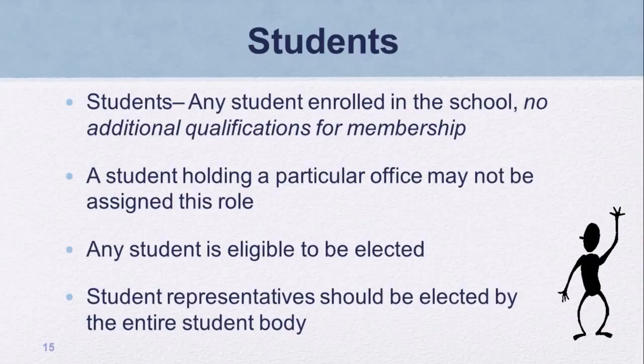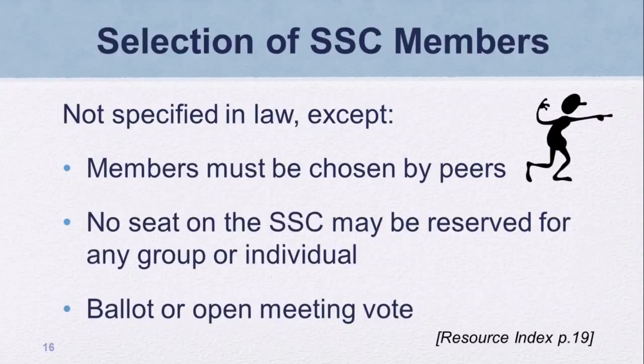Any student enrolled in the school may be selected by students to be a member of the SSC. Only an election process may determine which students will be on the school site council. Schools may not reserve seats on the council for any students. Student representatives should be elected by the entire student body. Members must be chosen by peers, and no seat on the SSC may be reserved for any group or individual.